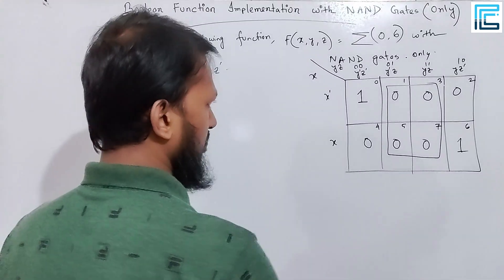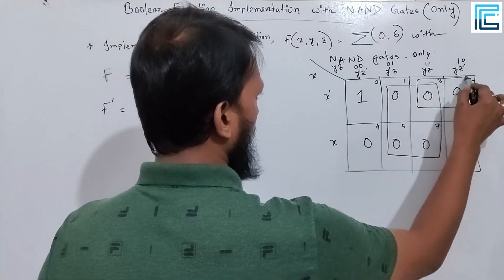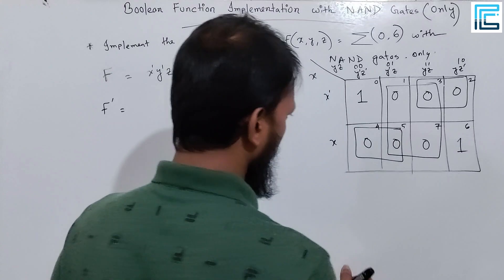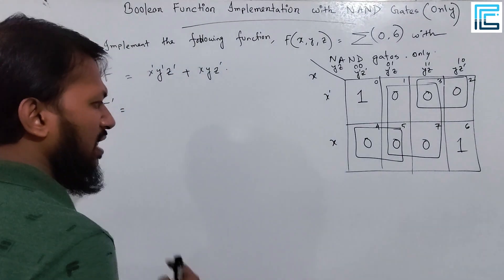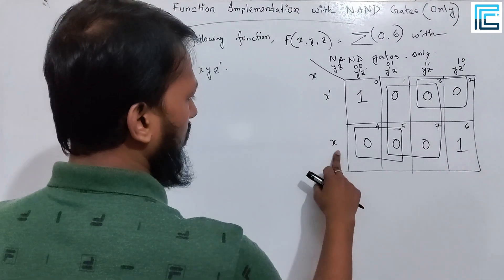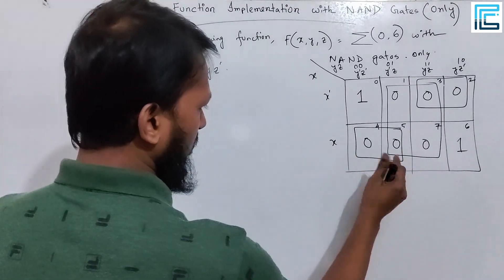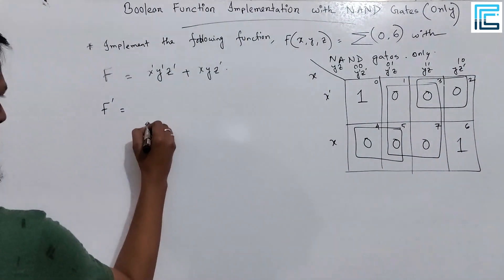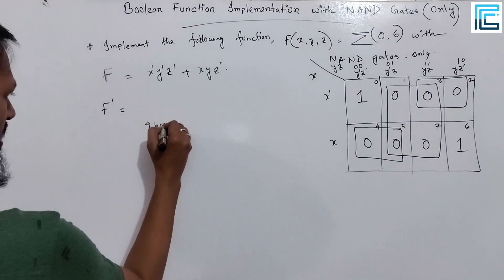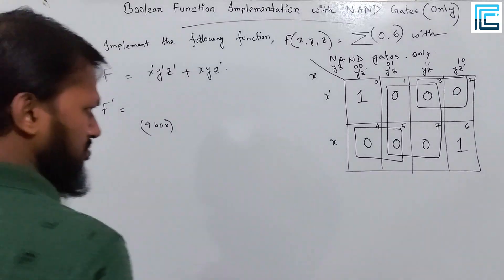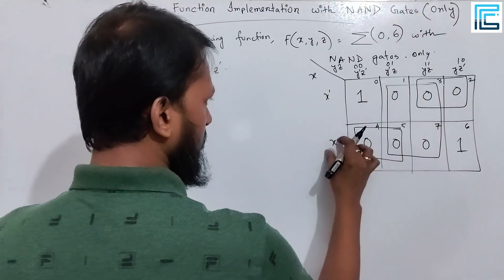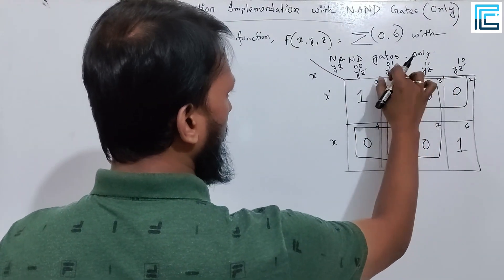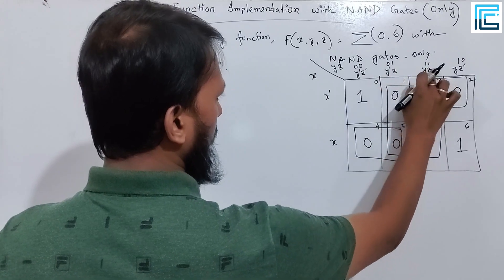In the 4th term, one term is common; in the 2nd term, one term is also common. Let's start writing. First, the 4-cell group — the 2-cell group is also written. What is the 4-cell group? The 4-cell group has a common term, and that common term is Z.